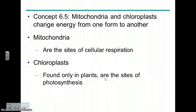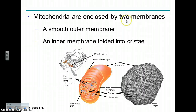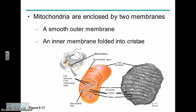Mitochondria are the sites of cellular respiration — we'll have a whole chapter on that. Nearly all eukaryotic cells have mitochondria, with an outer membrane and an inner membrane with folds called cristae, and the matrix inside. Mitochondria have their own ribosomes for producing proteins needed for cellular respiration, and as we'll see in the genetics chapter, they also have a little of their own DNA.